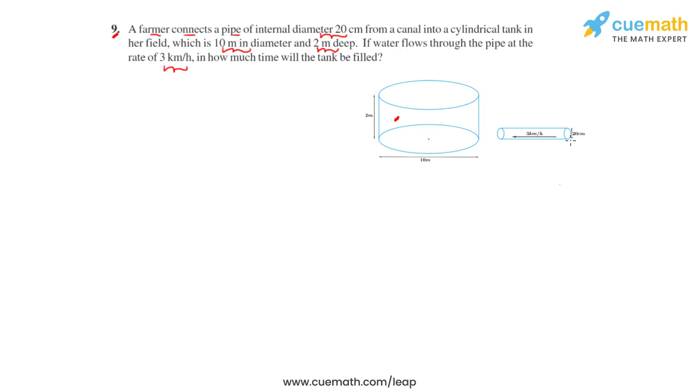Let's take the radius of the cylindrical pipe as R1. If we convert it into meters, we get the radius as 20 divided by 200 meters, and that is 0.1 meters. The radius of the cylindrical tank R2 equals 10 meters divided by 2, which is 5 meters, and the height h2 of the cylindrical tank equals 2 meters as highlighted in the figure.